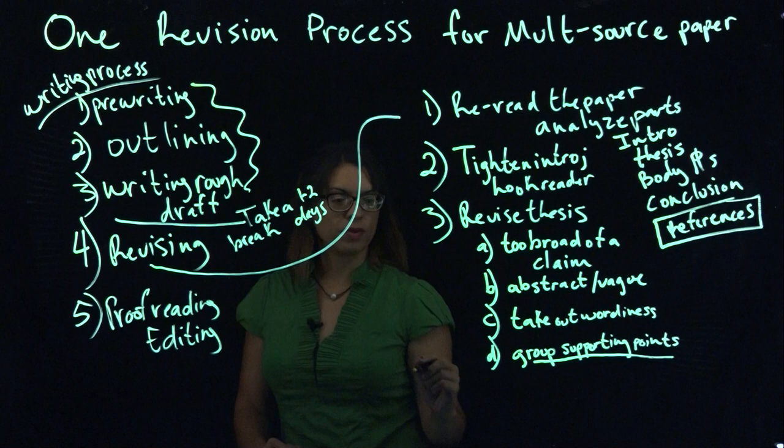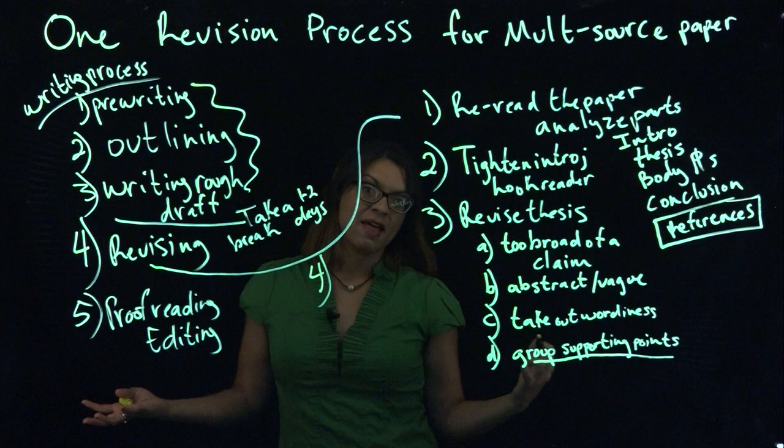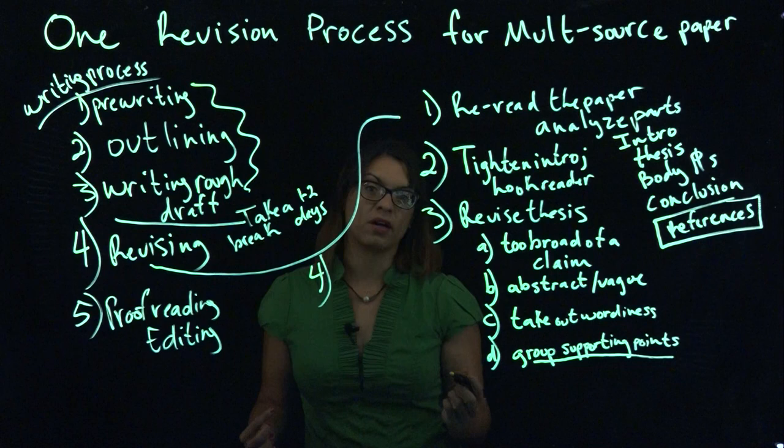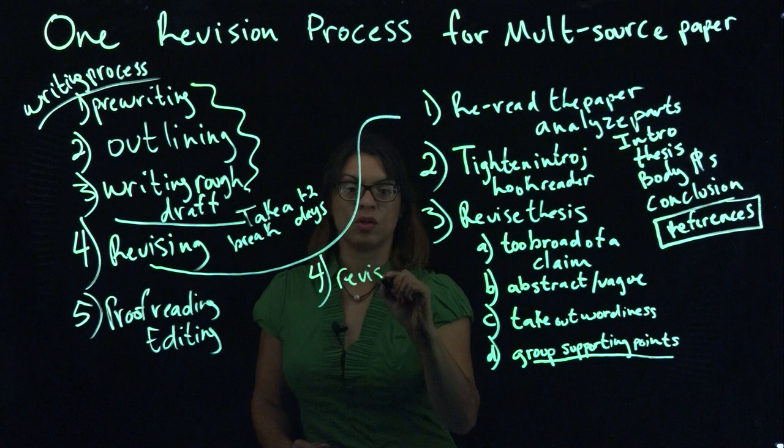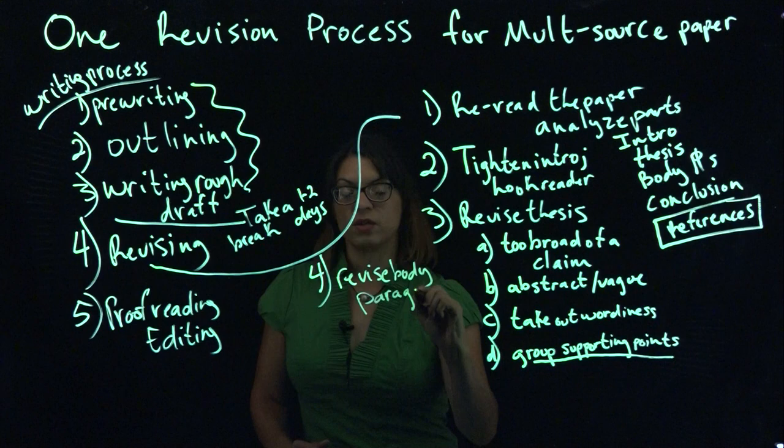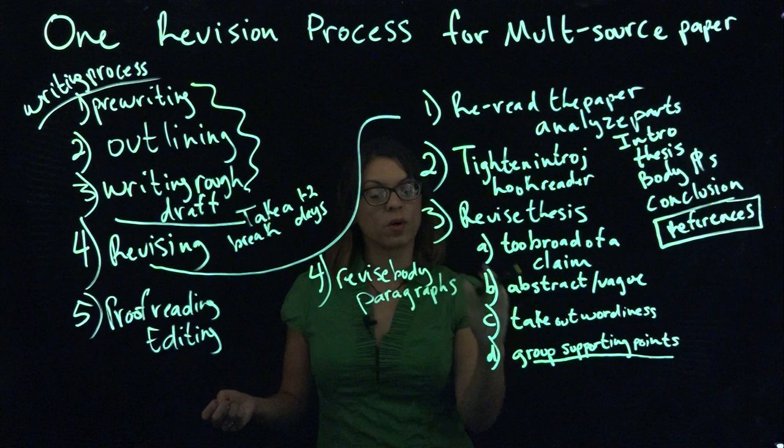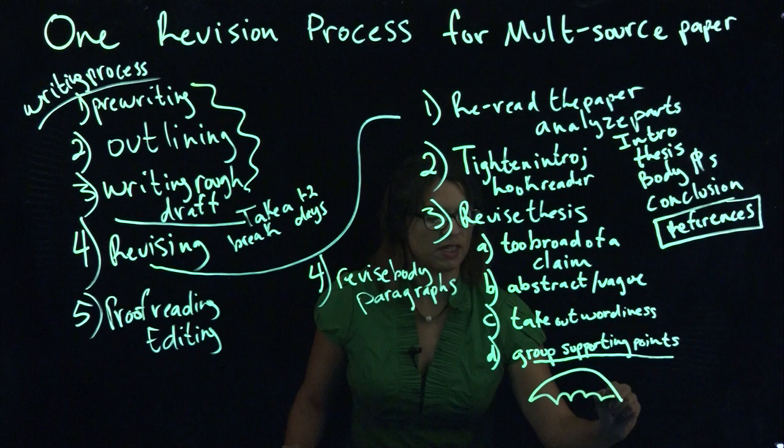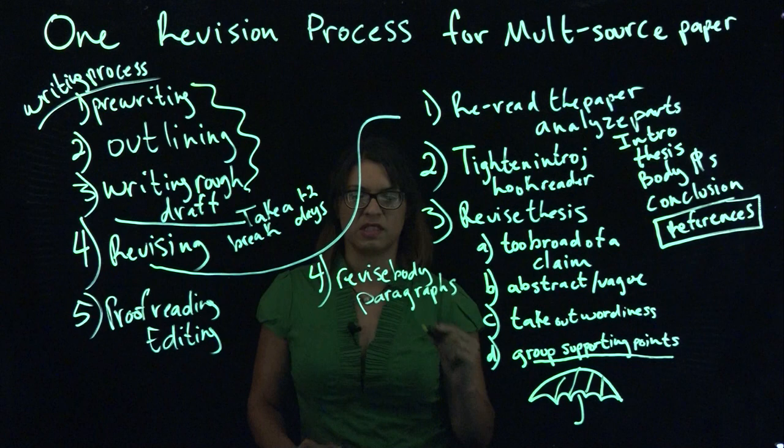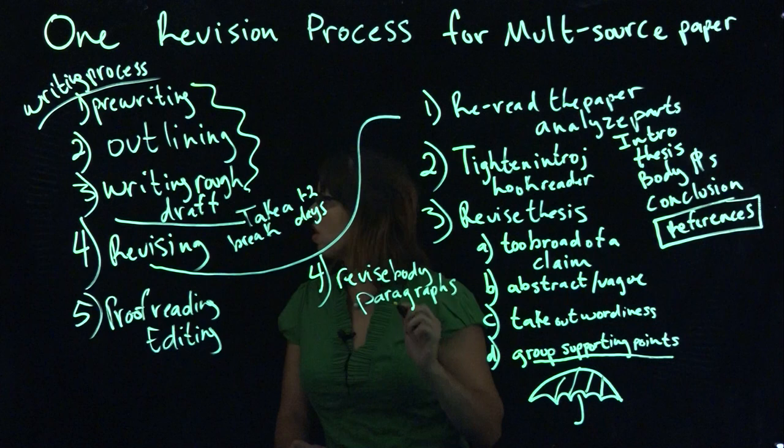If you are revising your paper and you've revised your thesis statement, then what you want to do is go through your body paragraphs and make sure that they're all working in support of that new thesis. What you might have to do is work on your topic sentences, make sure that the claims, the main ideas of each paragraph, are working in support of this new umbrella. That's working in support. That's your thesis. Revise your body paragraphs so they work in support of that, and then also conclude.